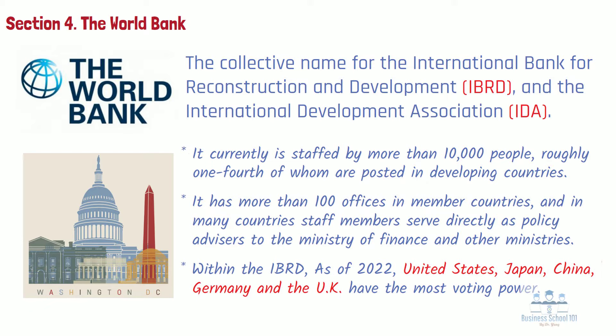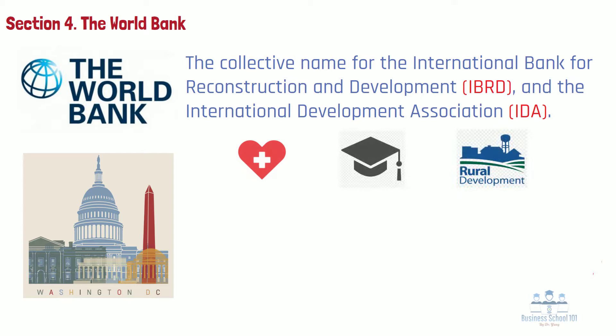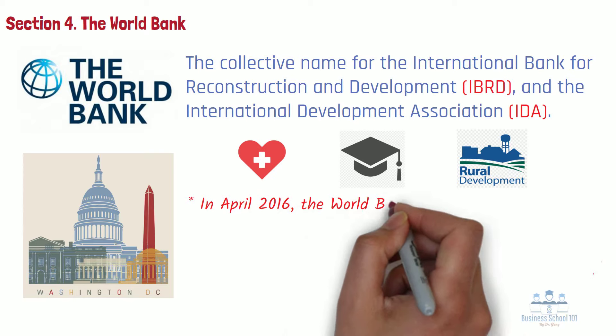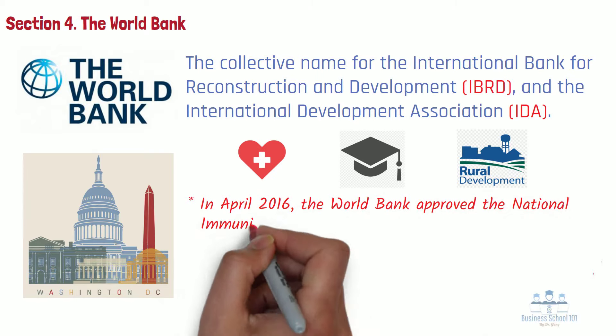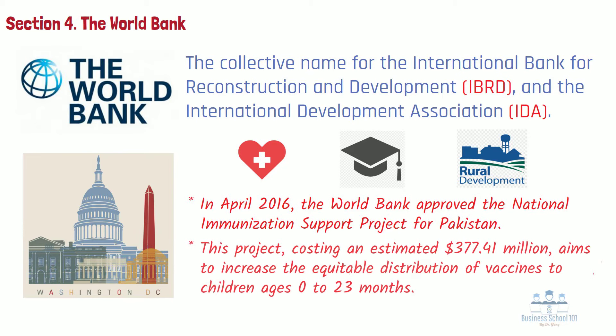Since it was established, the World Bank has provided numerous interest-free long-term loans, technical assistance, and policy advice to low-income developing countries in areas such as health, education, and rural development. For example, in April 2016, the World Bank approved the National Immunization Support Project for Pakistan. This project, costing an estimated $377.41 million, aimed to increase the equitable distribution of vaccines to children ages 0 to 23 months.